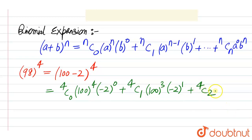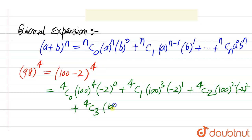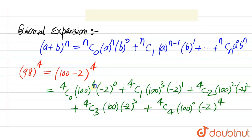Then we have 4C2 into 100 squared into minus 2 squared, plus 4C3 into 100 into minus 2 to the power 3, plus 4C4 into 100 to the power 0 into minus 2 to the power 4. Here we can see the power of 100 is ranging from 4 to 0, and the power of minus 2 ranges from 0 to 4.